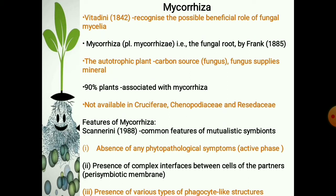Scanning in 1988 briefly pointed out the common features of the mutualistic symbionts, which include: the absence of any phytopathological symptoms in the partners during the active phase of mutualism; the presence of a common interface between cells of the partners with the predominant type being the perisymbiotic membrane surrounding intracellular symbionts; and the presence of various phagocyte-like structures during the establishment of symbionts and during the harvesting phase to control the symbiotic population by the host.